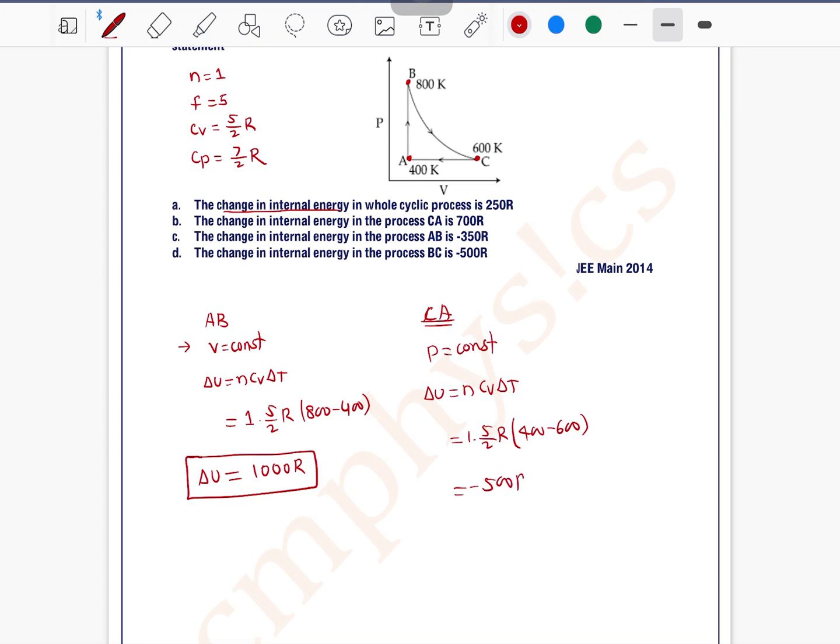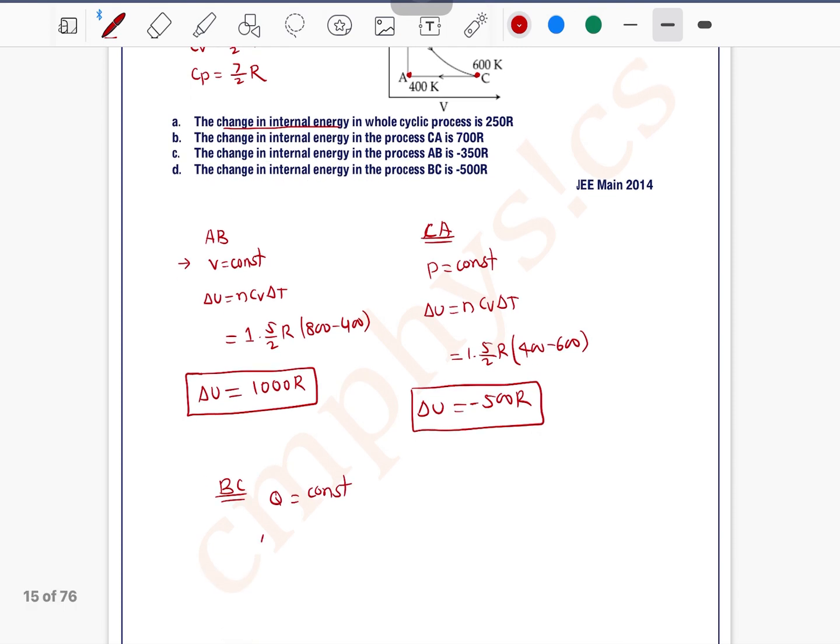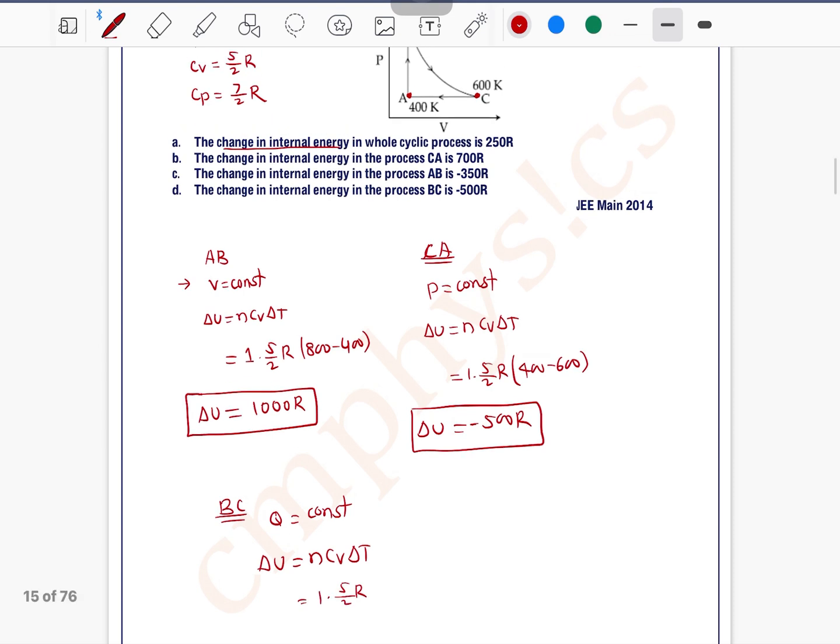In process BC, BC process is adiabatic process in which Q is constant. For adiabatic process CA, delta U can be written as n Cv delta T.